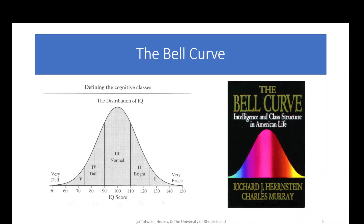So they have this whole bell curve situation with the distribution of IQ, and this is where you get your IQ scores from. On the left-hand side, 50 is very dull — not super smart. It goes to normal in the middle, so a score of between 90 and 110 was considered normal. Anything above 110 all the way to 150 was considered smart or really smart. That's where the scores fall.